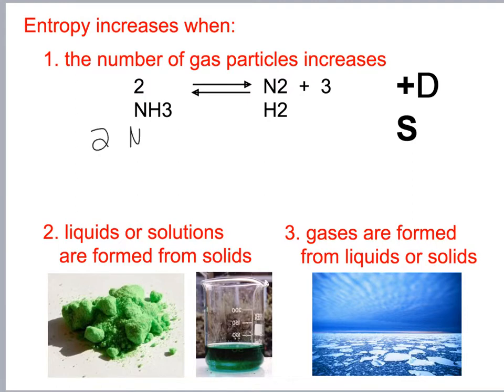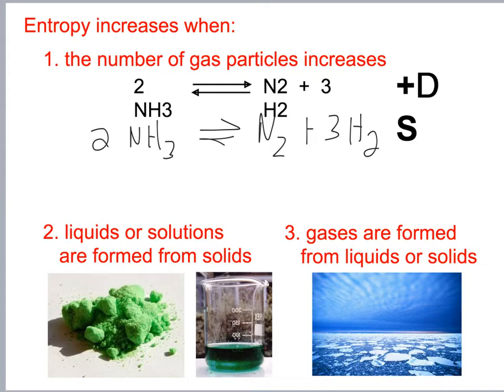For example, looking at 2NH3 — the reverse Haber process — it has a positive delta S. Why? We're going from two moles to four moles.